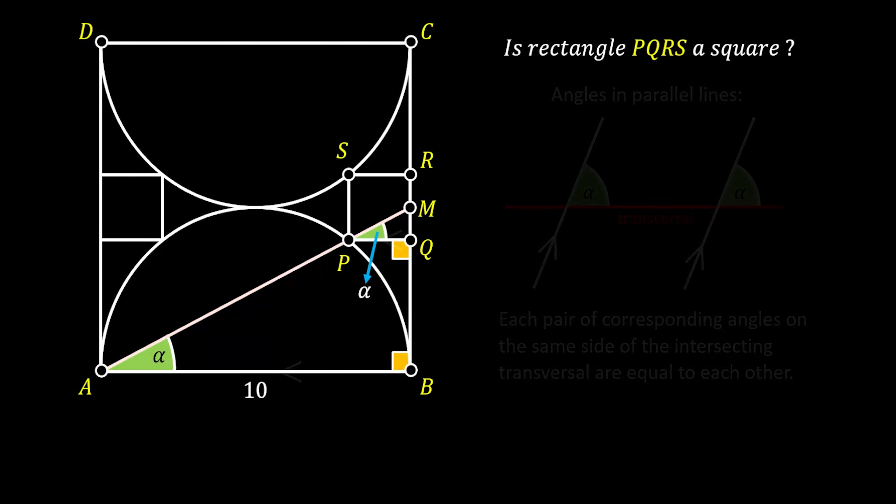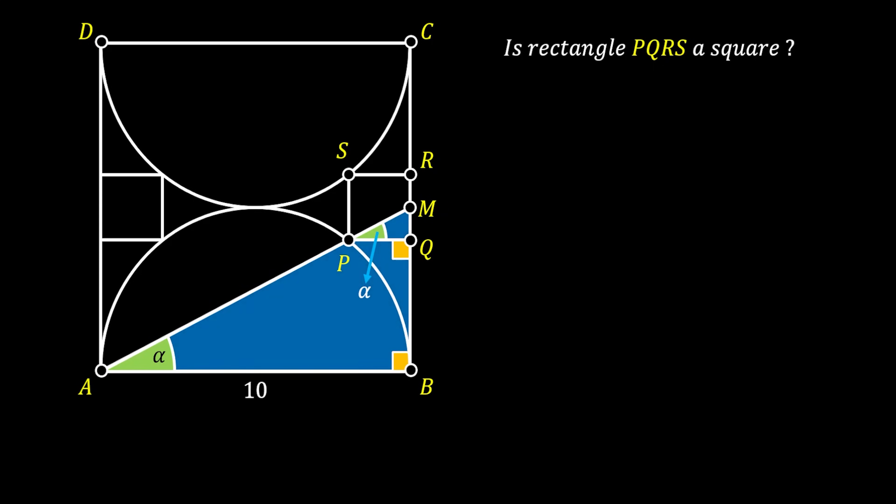This means that the acute angle at point A must be identical to the acute angle at point B. I will label both of those angles as alpha. Next, let's take a look at the right angle triangle ABM and the small right angle triangle PQM. Besides being right angle triangles, those two triangles also share the same acute angle alpha, so this means that those two triangles are actually similar.